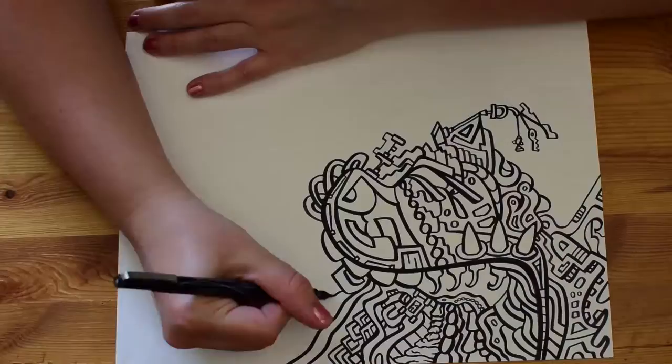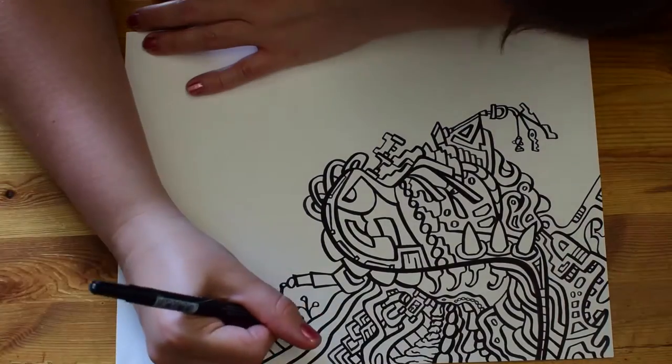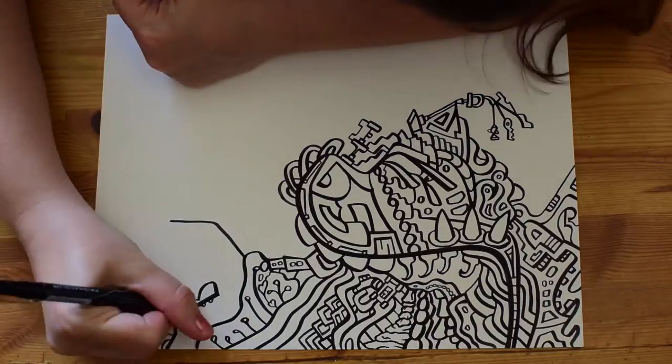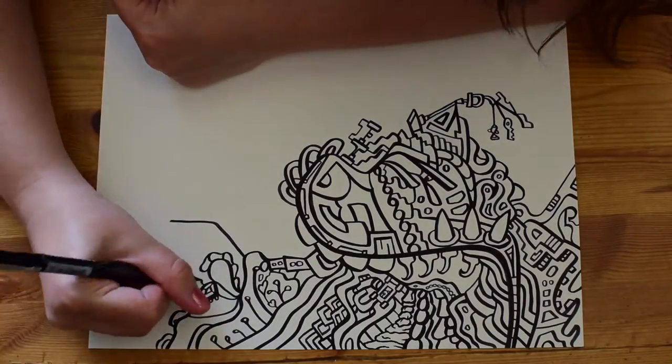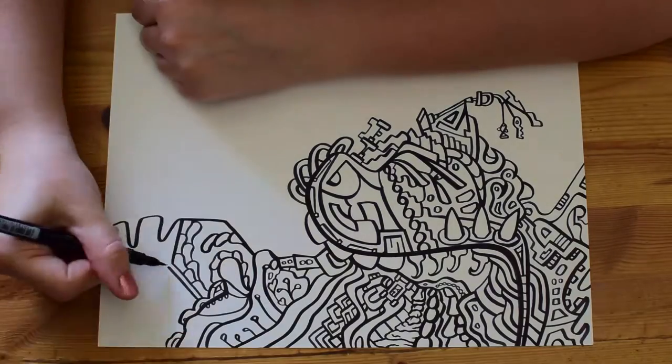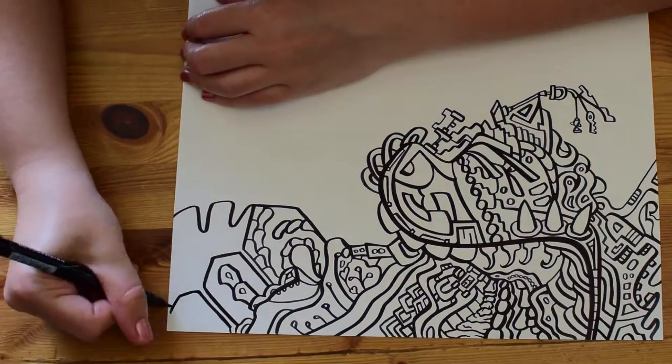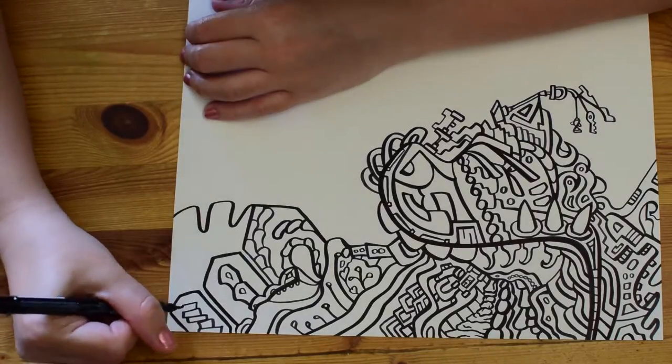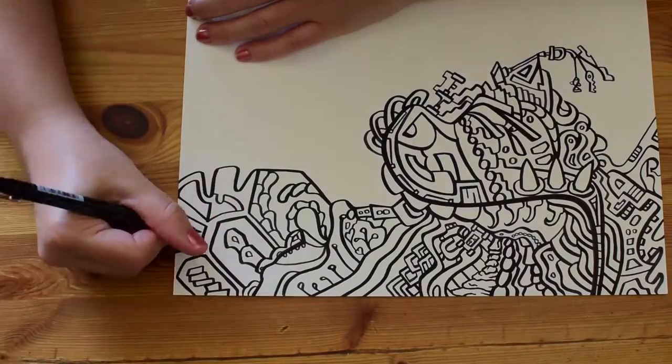She told me to fill a white cloud in with black crayon on the day we learned black, and I was trying to rationalize that as a four-year-old. Why is she having me color in this white cloud with a black crayon? It made no sense to me because I had never seen a black cloud.